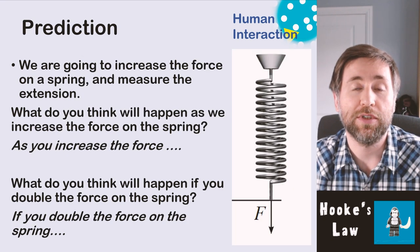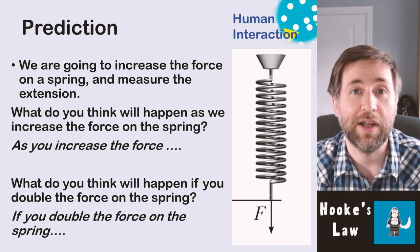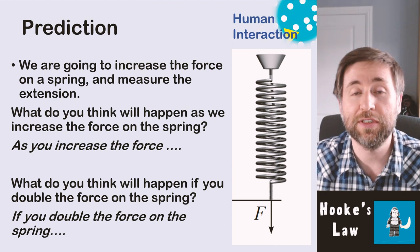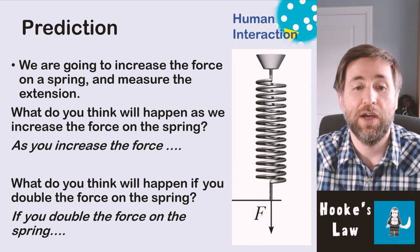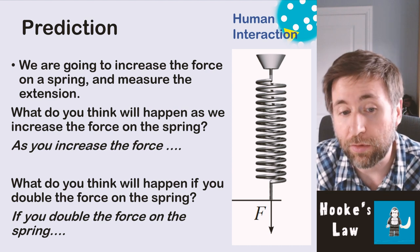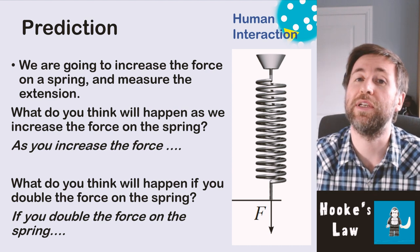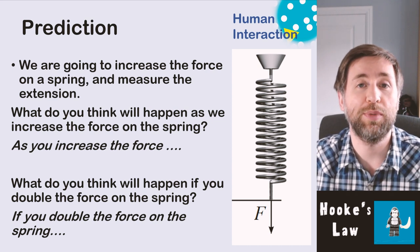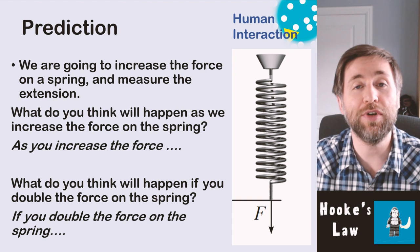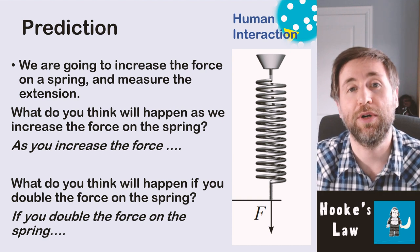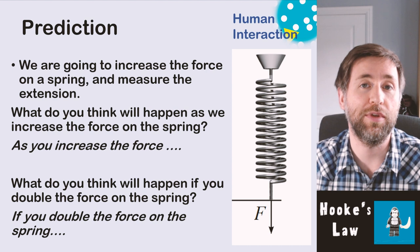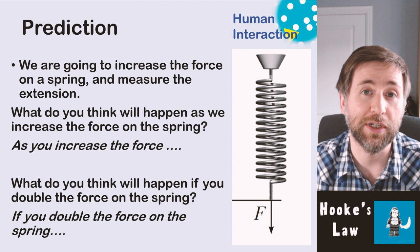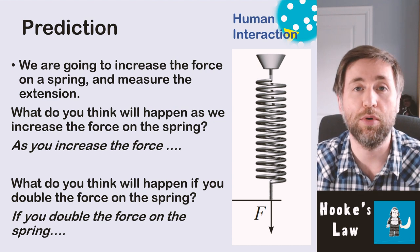Let's think about what's going to happen to these springs. As you increase the force you're going to get more extension. What happens if you double the force? Well if you double the force on the spring you will get double the extension — that's the idea of proportionality. You can express that by saying double one thing, double the other. Proportionality is a really key idea in physics, so this experiment is all about that idea.